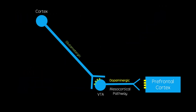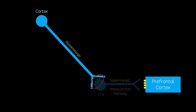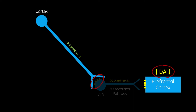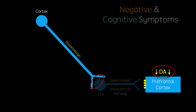Additionally, this would mean dopaminergic neurons in the mesocortical pathway cannot be activated by cortical neurons, and therefore producing dopamine hypofunction, also as described in the dopamine hypothesis.